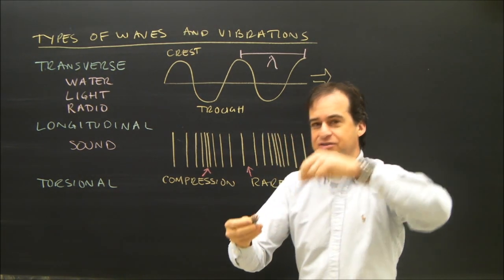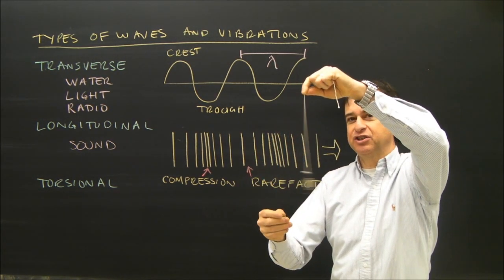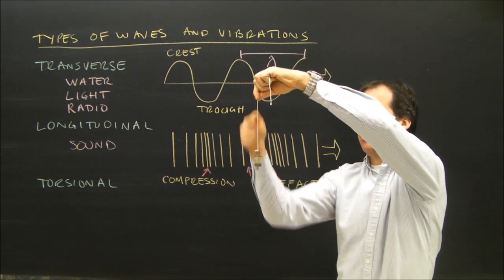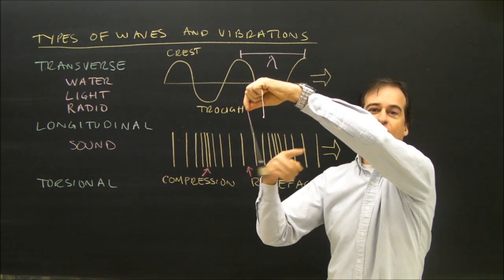Something that's vibrating, this is called a transverse vibration. Things that have transverse vibrations, transverse means across the axis. Here's the rest axis, and this is vibrating across that axis.